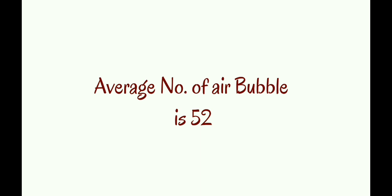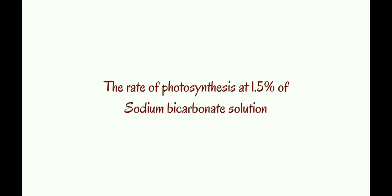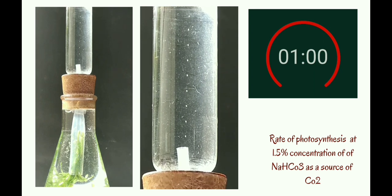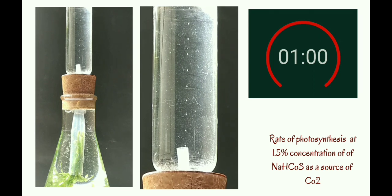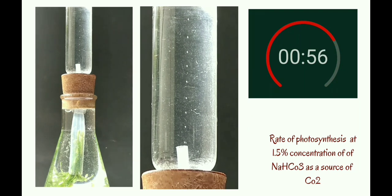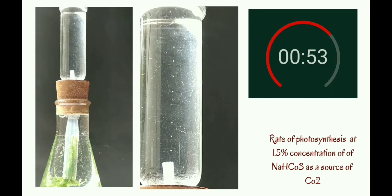Let's move on to the third setup, which is 1.5% sodium bicarbonate solution. Here you can see the rate of photosynthesis is quite fast. So to count the number of air bubbles here, you have to slow down the speed of the video. When the timer starts, count the number of air bubbles by slowing down the video speed.